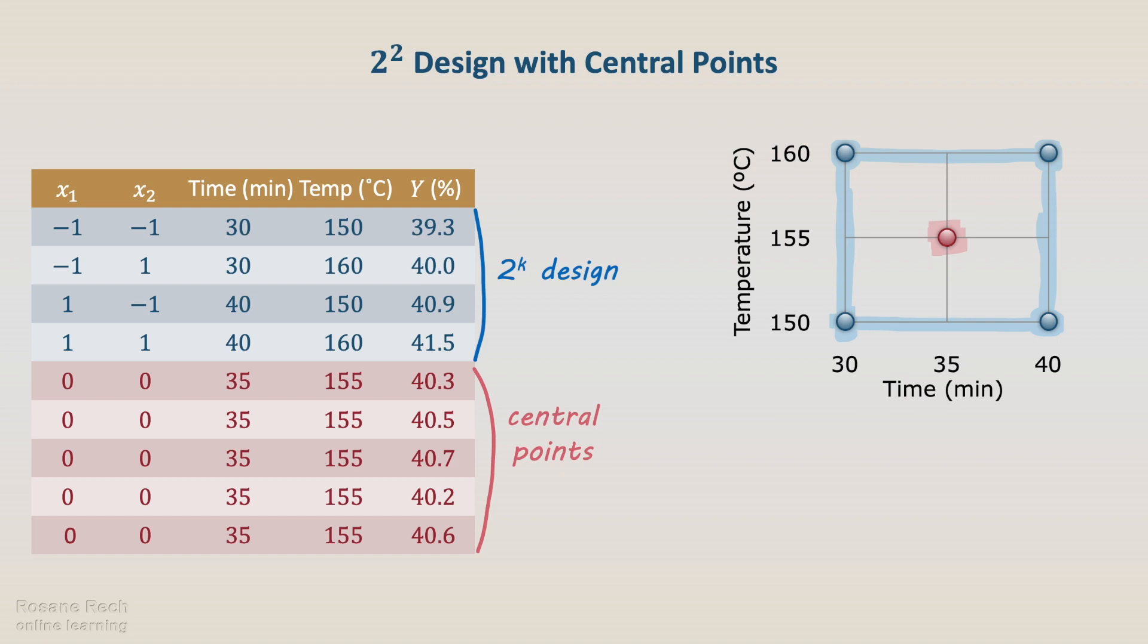In this design, the relationships between the coded and the natural variables are x1 equal to time minus 35, the central point, divided by 5, half the range, and x2 equal to temperature minus 155 divided by 5.